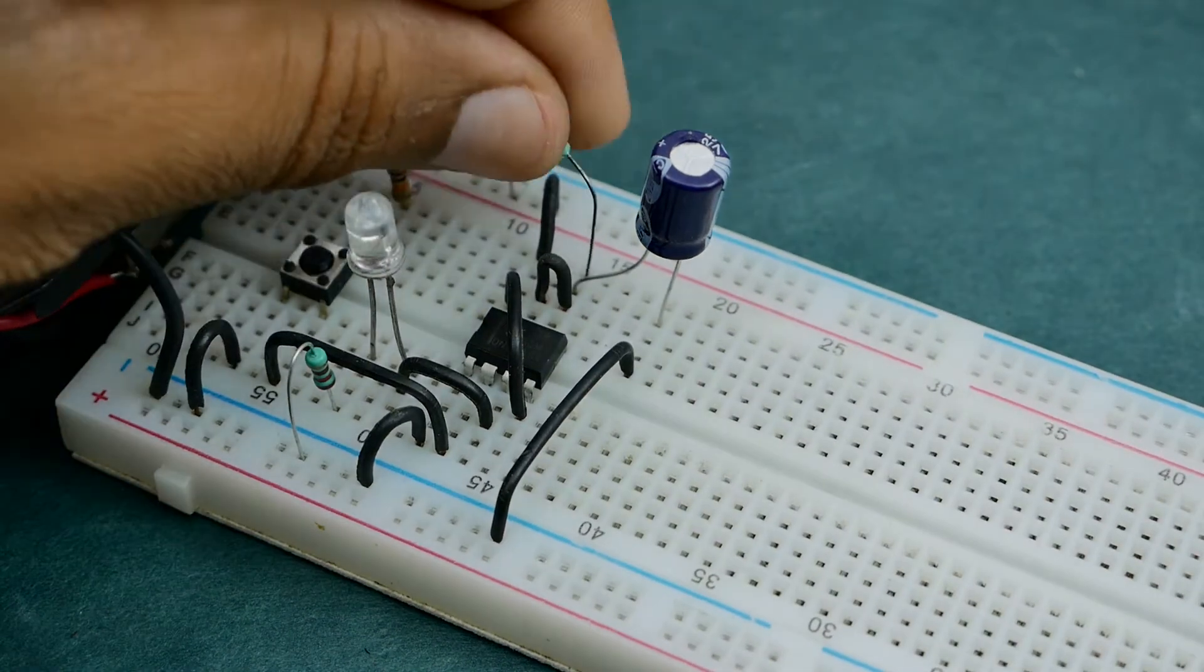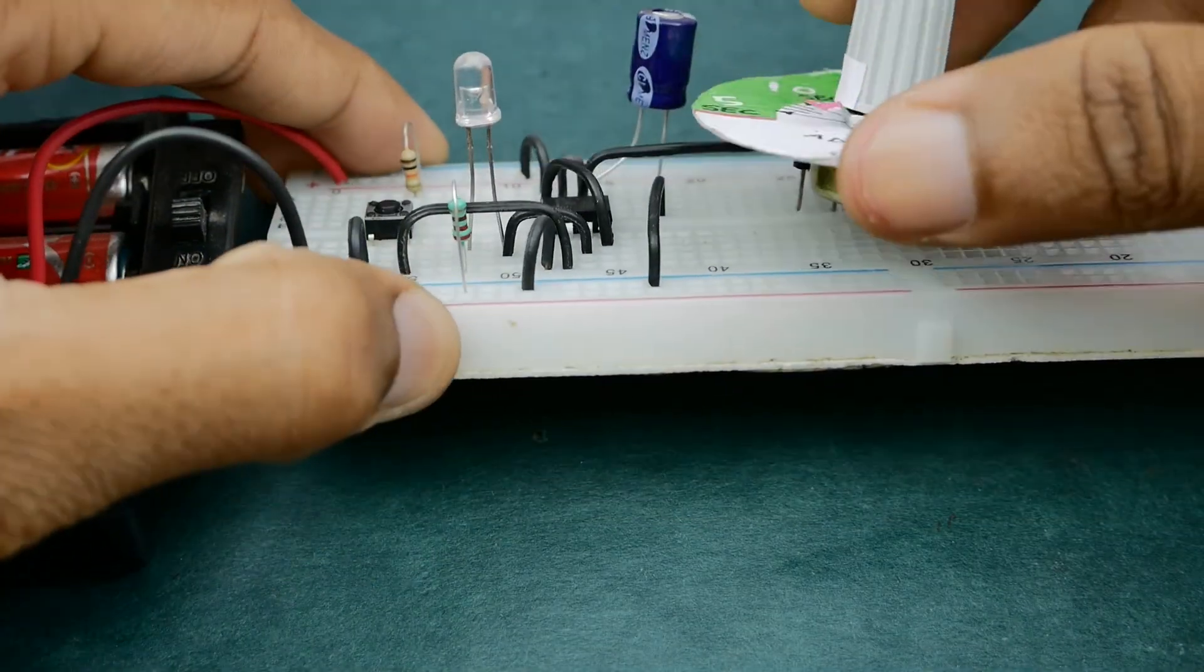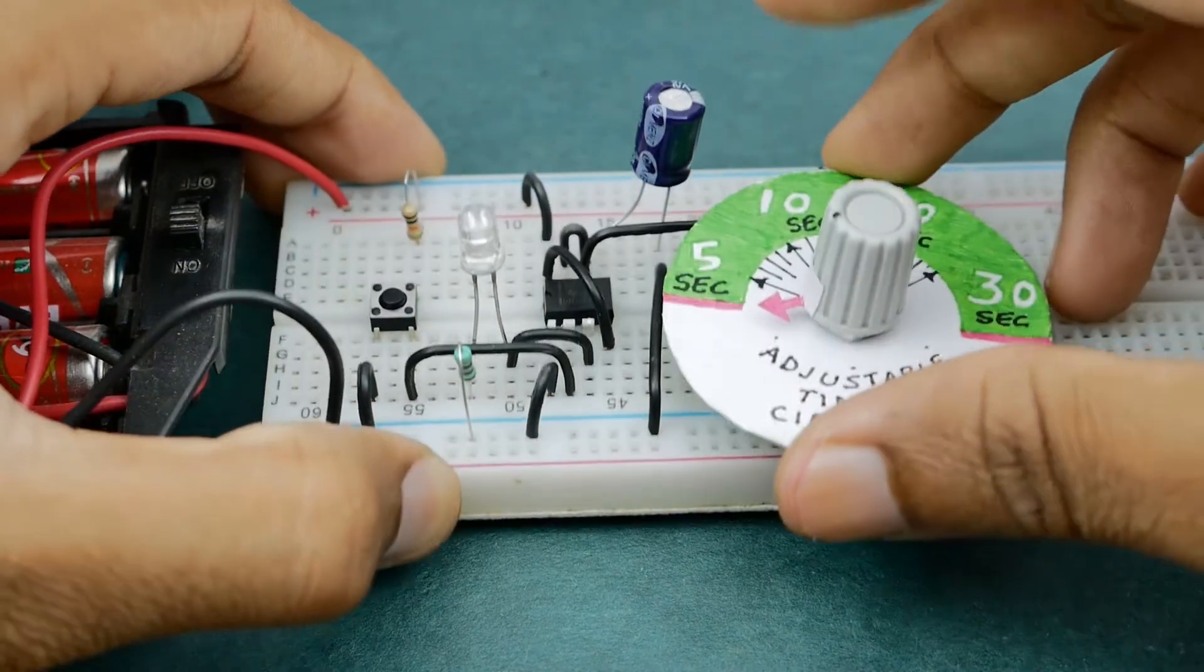We can also replace the timing resistor with a potentiometer in order to dynamically control the delay duration.